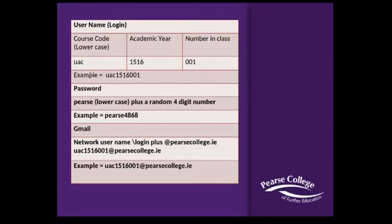For example, this student's individual username login is made up of the course code UAC, academic year 1516, and the number 001. Please note that your course code when you log in will be lowercase — so: uac1516001.